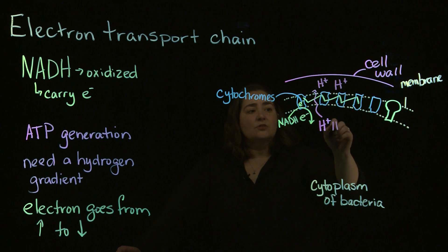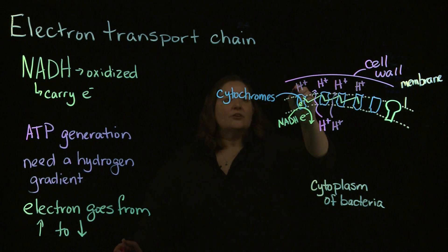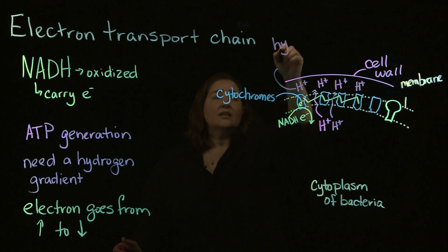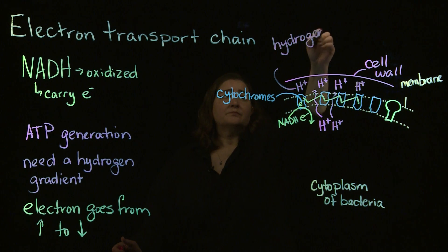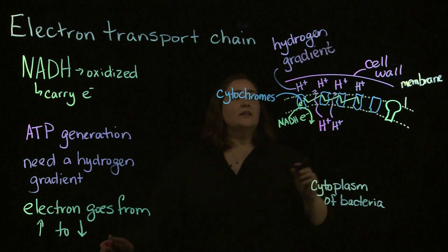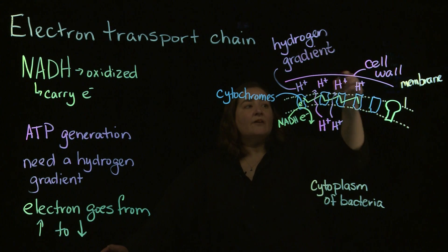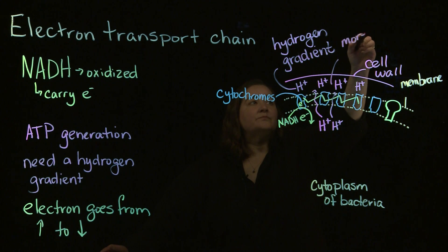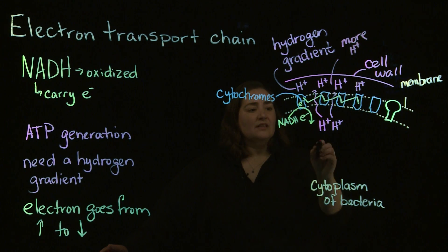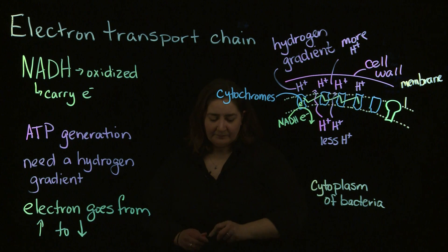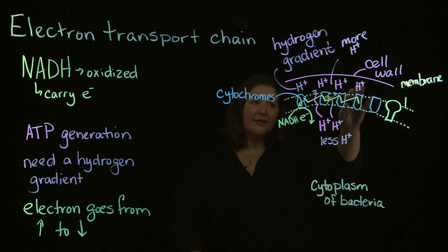What that's going to do, you're going to take a large amount of hydrogen there, and what you're going to generate there is our hydrogen gradient. Oops, that's an A, not a D. I got ahead of myself. So, essentially, you have more hydrogen here, less hydrogen cytoplasmically. And what that does is that creates our hydrogen gradient.